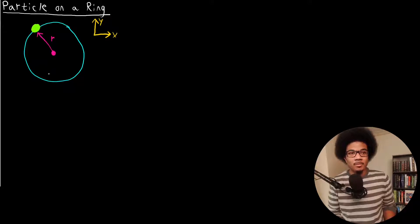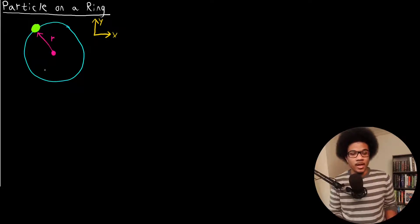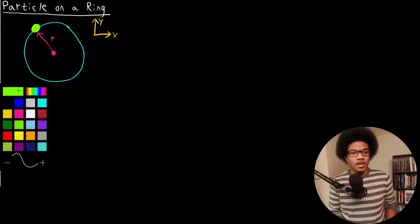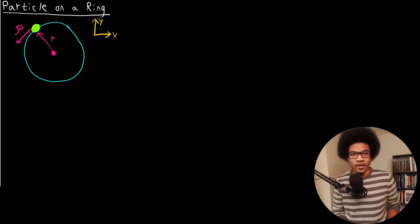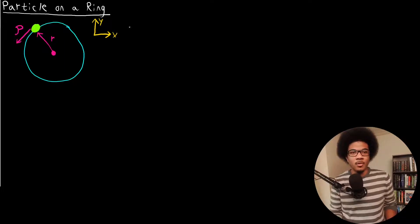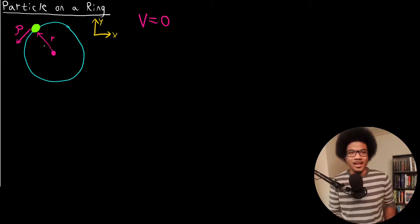So this is what the classical problem looks like visually. You have a particle — this green sphere — that is traveling on a ring in two dimensions, so it can only move in the x and y directions. It's going to be a certain distance r away from the center of that ring. As it's traveling along this circle, it's going to have a linear momentum that kind of bisects the circle it's traveling along. We'll use the Greek letter rho to describe the linear momentum. We're going to say that there's no potential energy acting on this particle, so the potential energy is equal to zero.